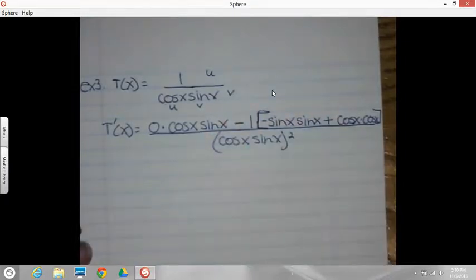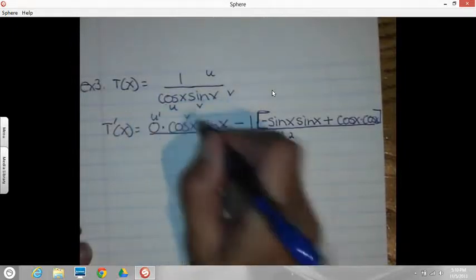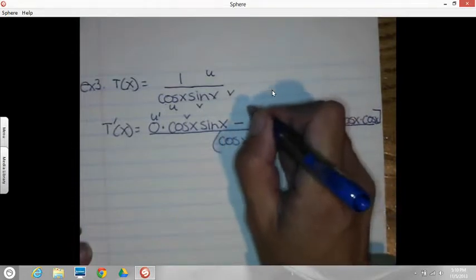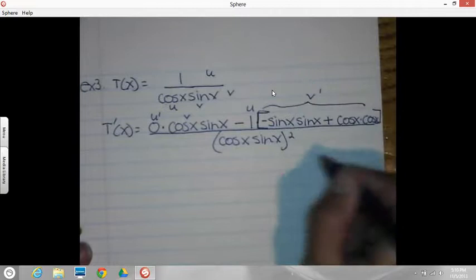So I did a u prime times v, u, all of this was v prime, and then over the v squared.